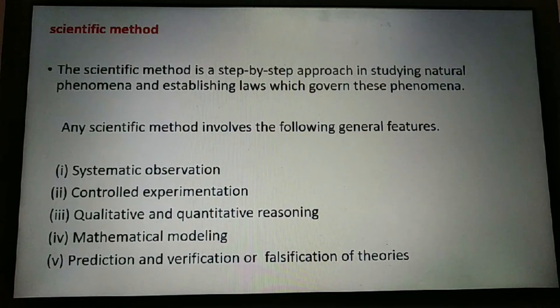The scientific method is a step-by-step approach in studying natural phenomena. Any scientific method involves the following general features. One is Systematic Observation.